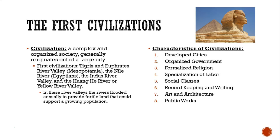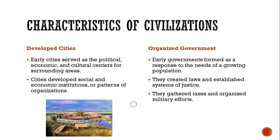There are eight main characteristics of civilizations: developed cities, organized government, formalized religion, specialization of labor, social classes, record-keeping and writing, art and architecture, and public works. As we go through the different river valleys and all the other civilizations we study in this class, pay attention to look for those eight characteristics and how they represent themselves in each civilization.